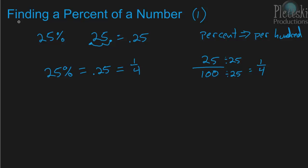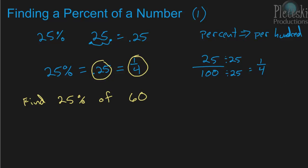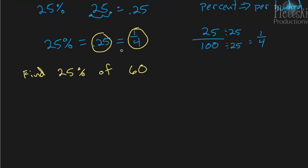Now, finding a percent of a number, we're going to use either the decimal or the fraction, and we're going to multiply it by whatever number we want to find 25% of. So if the question was find 25% of 60, we would then multiply 60 either by 0.25 or by 1 fourth. And we can do both of them and show that you'll get the same answer.